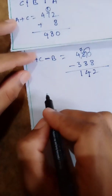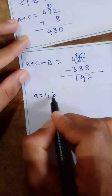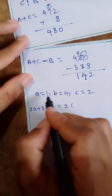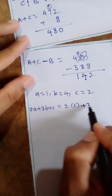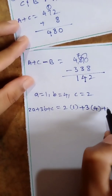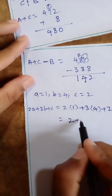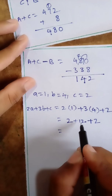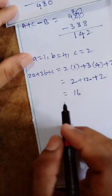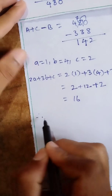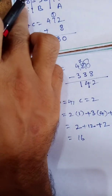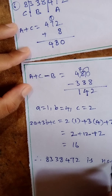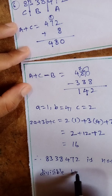Now A=1, B=4, C=2. Apply the formula: 2A plus 3B plus C = 2×1 plus 3×4 plus 2 = 2 plus 12 plus 2 = 16. Since 16 is not divisible by 7, the given number 83,38,472 is not divisible by 7.